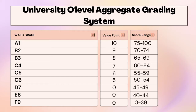Now in this table we are going to consider the university O-level aggregate grading system. In this grading system, as you can see on the screen, universities grade the O-level result using A1, B2, B3, C4, C5, C6, D7, E8, and F9. Each of these grades has various points and a score range, and these point values are what are used in calculating your aggregate mark when you go for any admission.